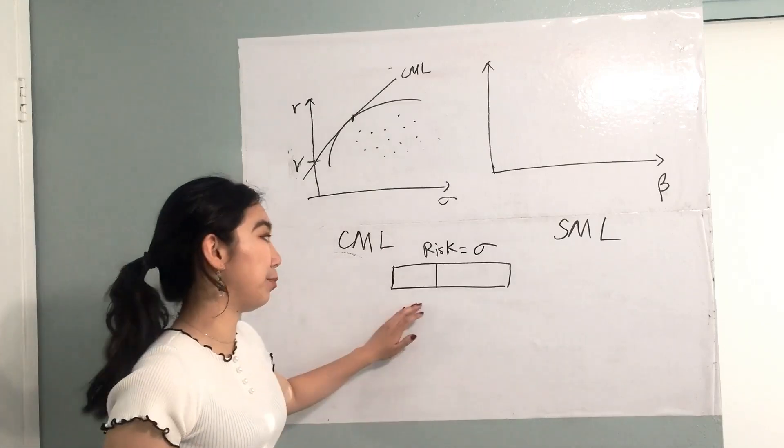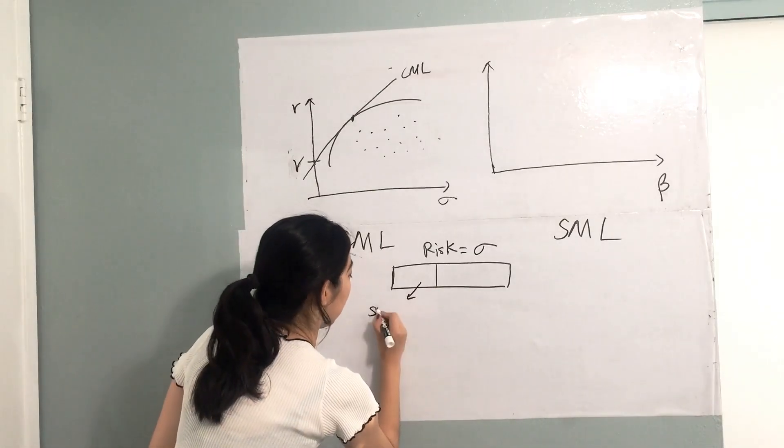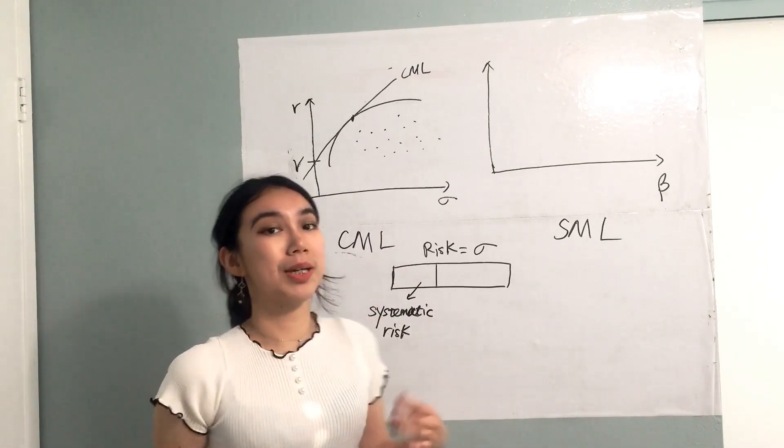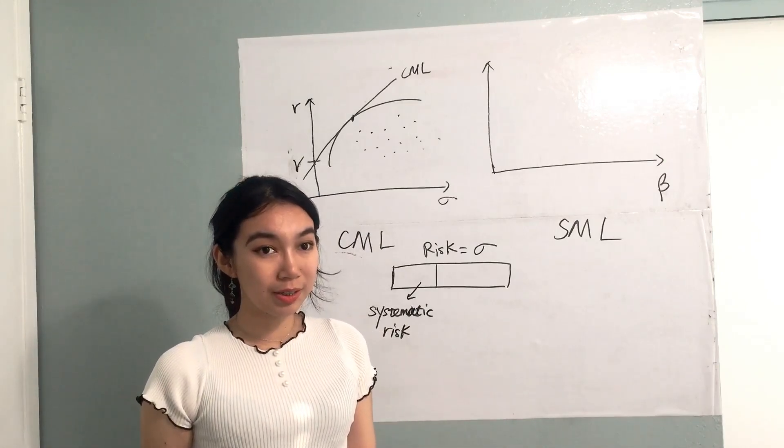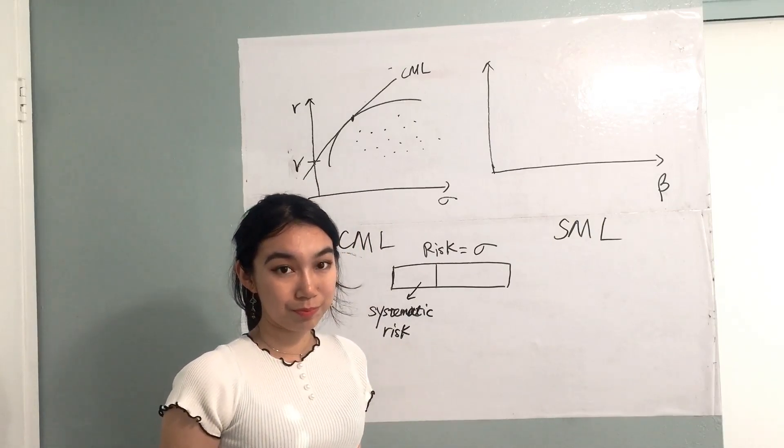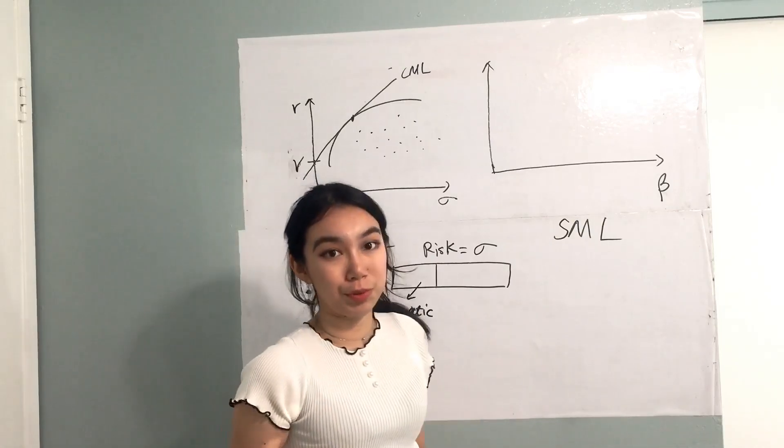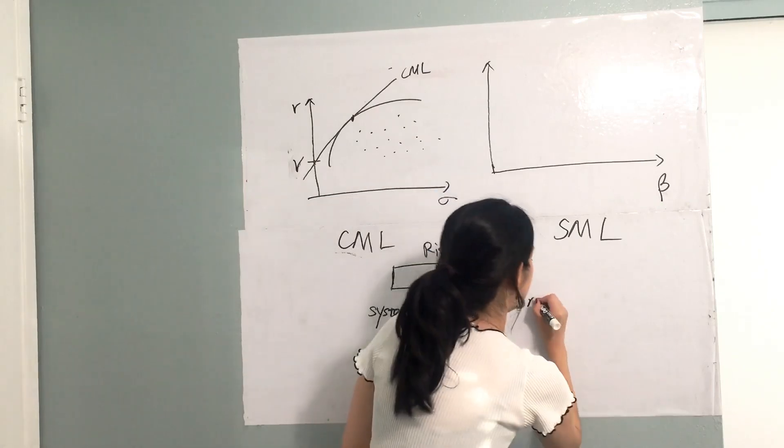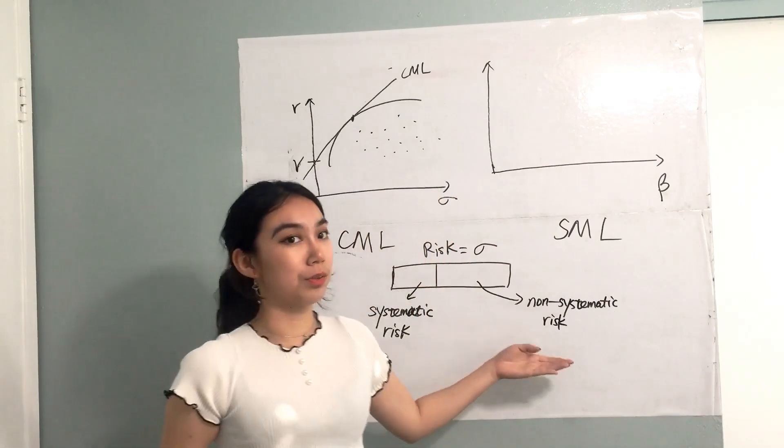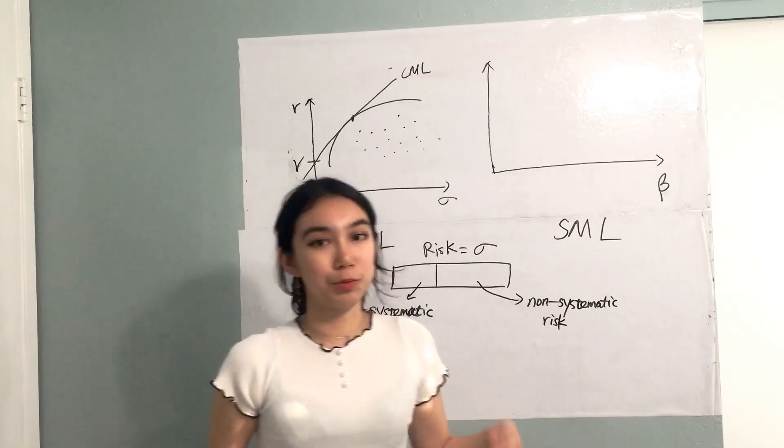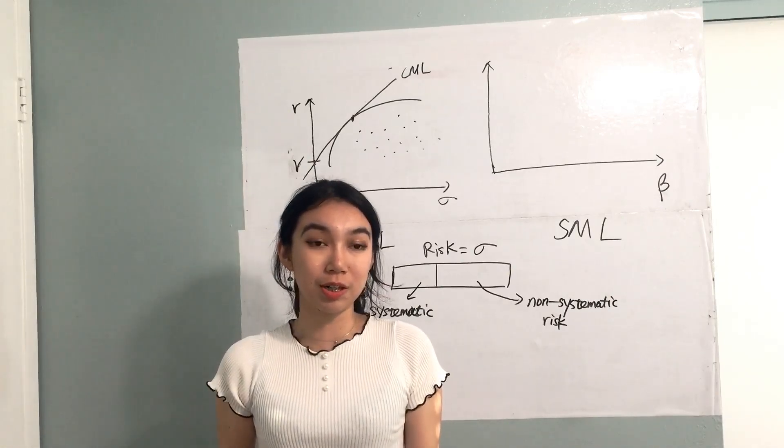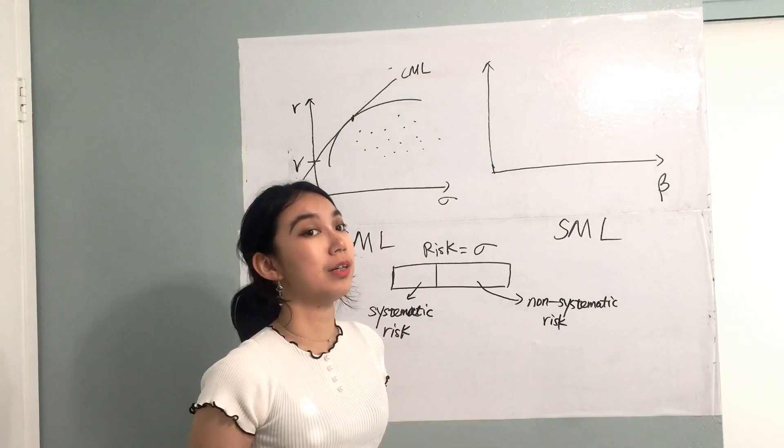The stock has systematic risk, which is also the whole market risk. The systematic risk cannot be diversified away, for example, like the inflation or the government policy, while the other part of the risk is called the non-systematic risk. We can also call it company-specific risk. The risk is specific to the company, such as the risk from the company structure or the specific industry.